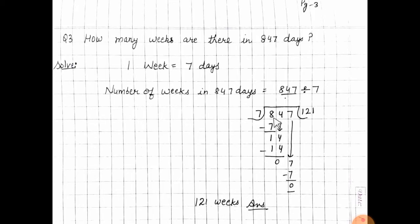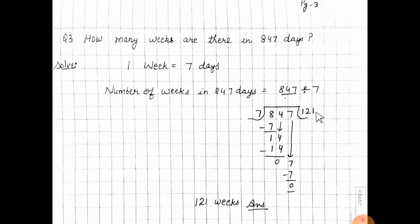847 को 7 से divide करो। सबसे पहले single digit लेंगे — 8. 7 का table 8 तक read करो: 7 ones are 7. 7 को 8 में से subtract करो — 1 आ गया। Next digit move करो — 4, 14 बन गया। 7 के table में 2 पे 14 आता है — 7 twos are 14. 14 में से 14 subtract किया — 0. Next digit है 7. 7 ones are 7, 7 को 7 में से subtract किया — 0. So, number of weeks in 847 days = 121.